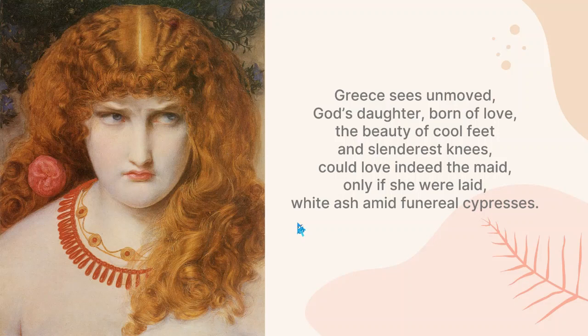Greece could love Helen 'only if she were laid, white ash amid funeral cypresses.' The Greek people could only love Helen if she were dead. The cypress trees are associated with funerals — coffins were made from them, or they were burned during funeral rites. So it seems that only the dead, lifeless Helen is what would be praised, not the living, lively Helen. It seems the painter of the referenced painting also held no positive attitude toward the figure of Helen. This was my explanation of the poem — I hope you enjoyed it. See you in my next videos.